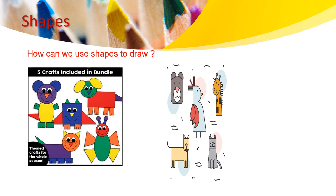So learners, think — look at the pictures and tell me, what shapes do you see? Do you see a square? Do you see a triangle? Do you see a circle? Do you see an oval? During this class we will be learning how to use shapes to draw different animals.